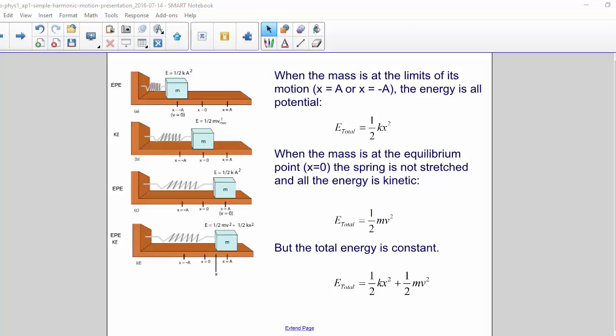When the mass is at the limits of its motion, either the positive or negative amplitude, the energy is all potential. It is not moving. When the mass is at the equilibrium point, where x equals zero, the spring is not stretched, and it has all kinetic energy.